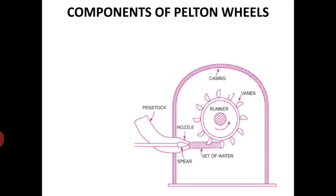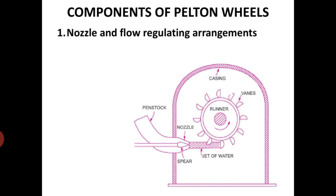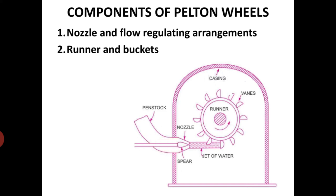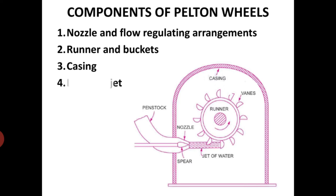The components of the Pelton wheel are: first, a nozzle and flow regulating arrangement; second, a runner and buckets — the rotating part of the turbine is called the runner; third, a casing; and fourth, a braking jet. The Pelton wheel is a tangential flow impulse type of turbine.